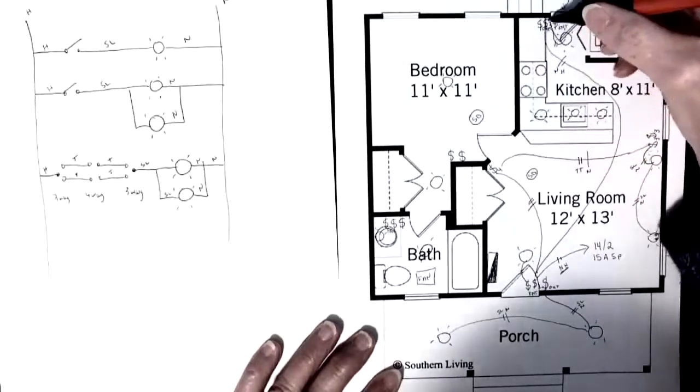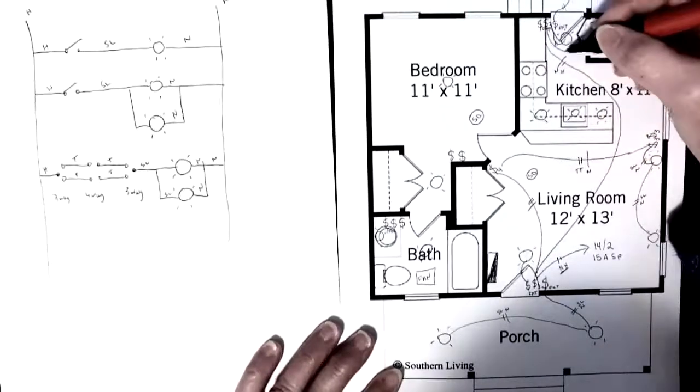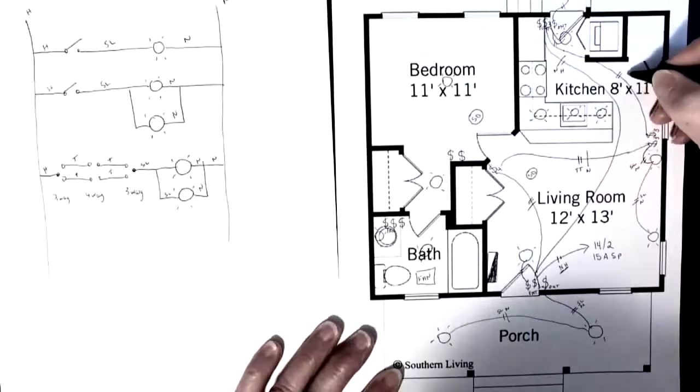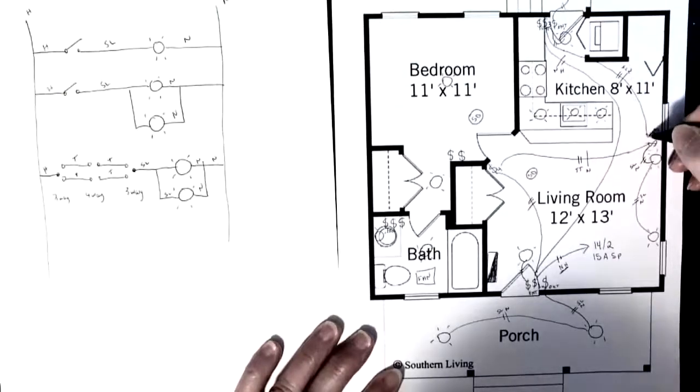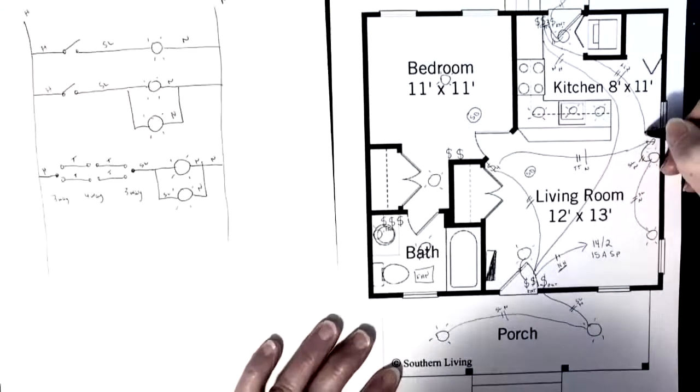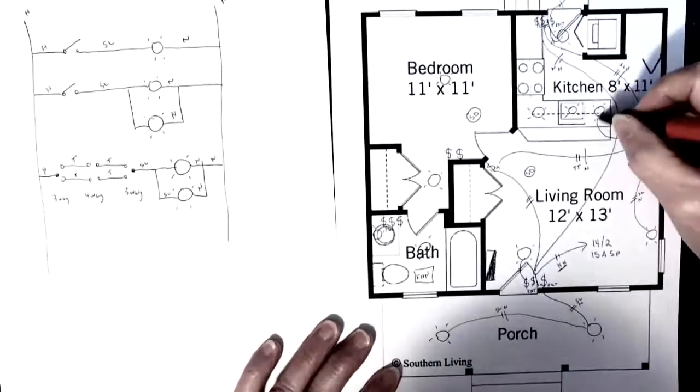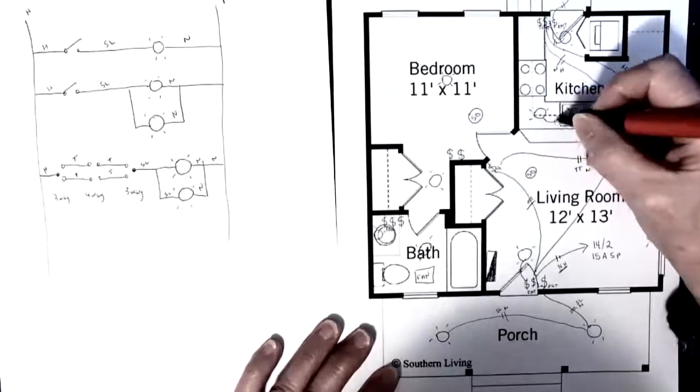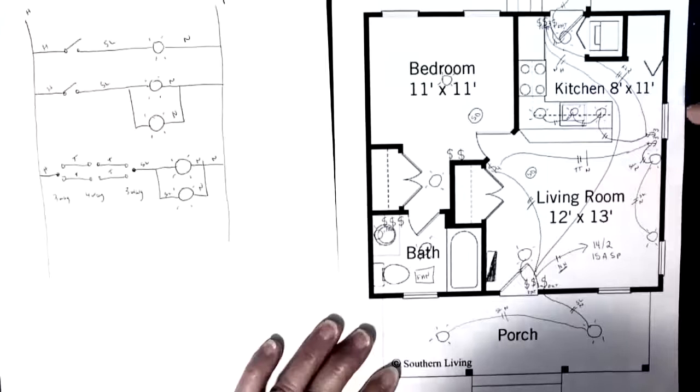So right now, I have a hot and a neutral at this end. What I need to do is take a three-wire over to there, so that my traveler, traveler, neutral are now going through. And then from there, I can take a two-wire off to my three pot lights, and just join them in parallel. So I'll show you what this circuit looks like now on the schematic.